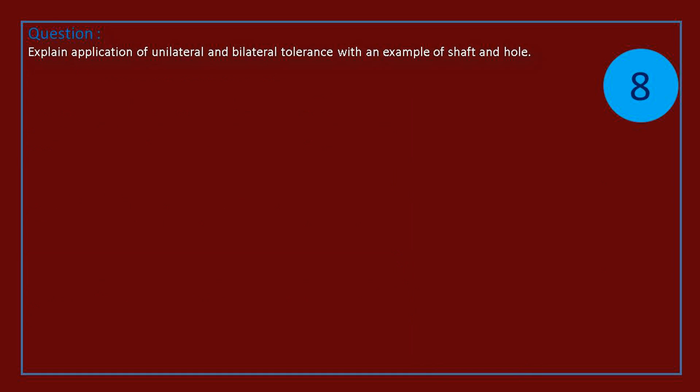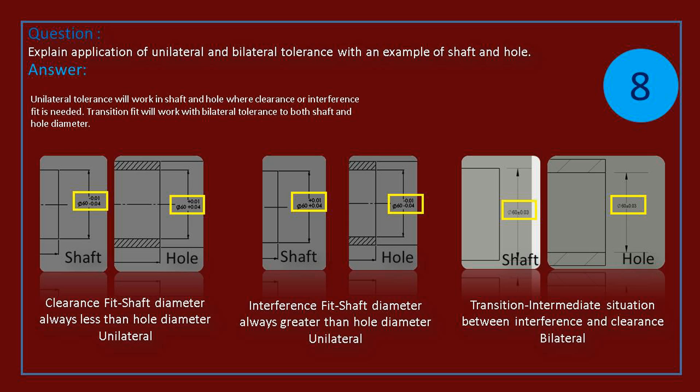Question: explain application of unilateral and bilateral tolerance with an example of shaft and hole. Answer: unilateral tolerance will work in shaft and hole where clearance or interference fit is needed. Transition fit will work with bilateral tolerance to both shaft and hole diameter.